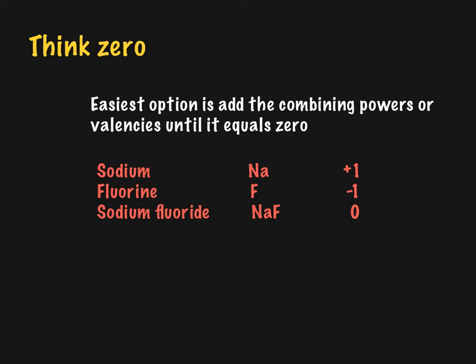One of the ways we can think about forming compounds is to go through this whole idea of using, adding the combining powers together until we get a value of zero. So if we think about sodium fluoride, sodium has a combining power, we see it here, has a combining power of one, which is the same as the charge on the sodium ion. So we put it in.